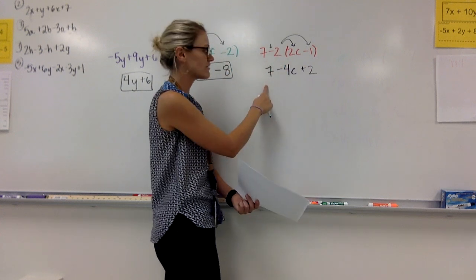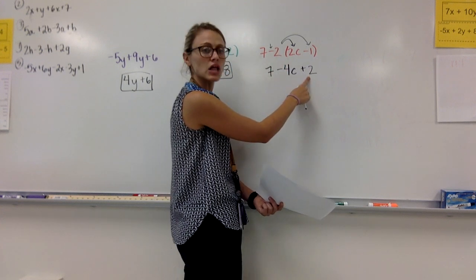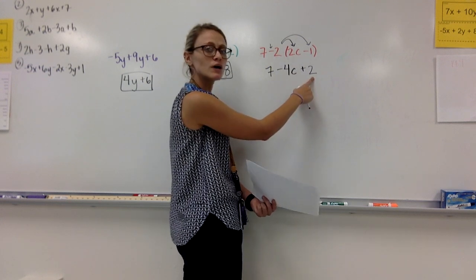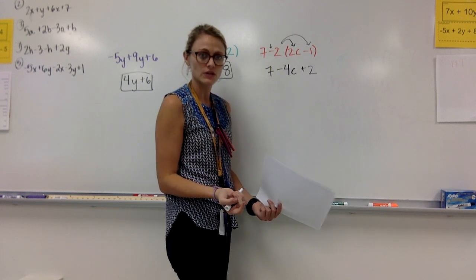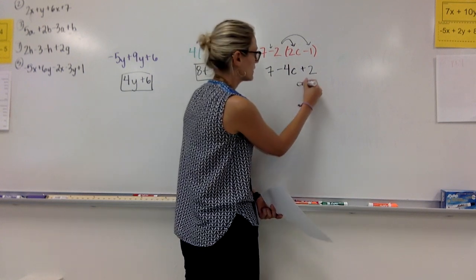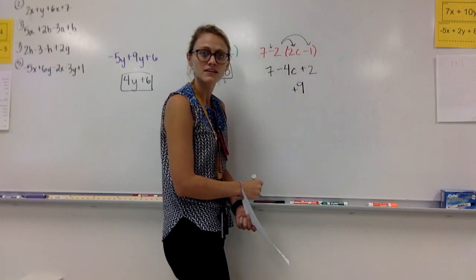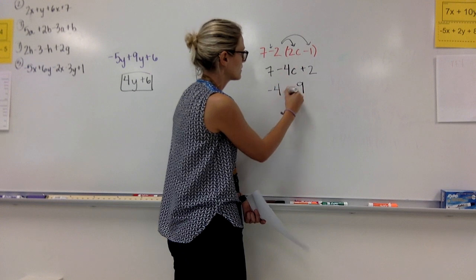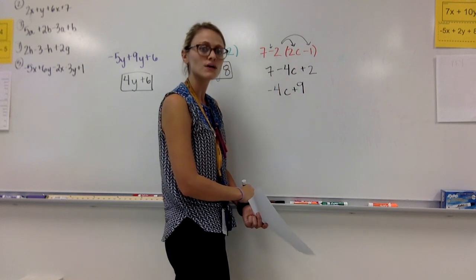So now I have 7 - 4c + 2. I can combine the 7 and the 2 because neither of them have a variable. So 7 + 2 is a positive 9. And I can bring down my -4c.